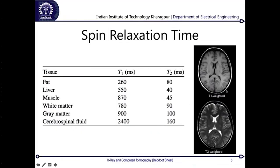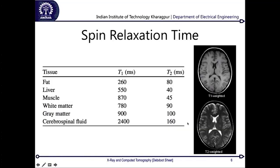Looking at a T1-weighted image and a T2-weighted image side by side: we look at intensities at different regions after a particular time interval. Regions with higher T1 relaxation time appear brighter. The meningeal lining around the brain, being made of fat, remains white in T1. Grey matter and white matter show differences — white matter appears lower intensity and grey matter higher in T1, but they are inverted relative to each other. In T2, grey and white matter are harder to distinguish because their relaxation times are of similar order.